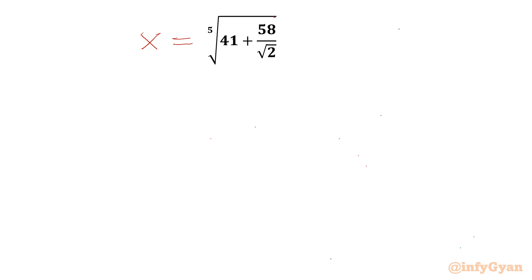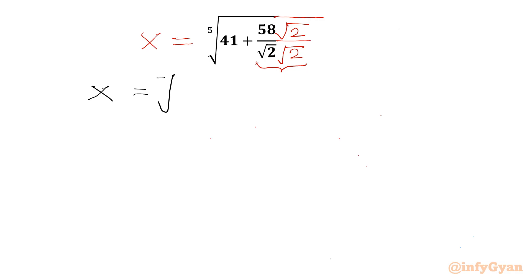I will begin with rationalization of 58 over root 2. I will multiply with root 2 in the numerator and denominator. The denominator will be 2, so we can cancel 58 and denominator 2. So we will be writing x is equal to the fifth root of 41 plus 29 root 2.